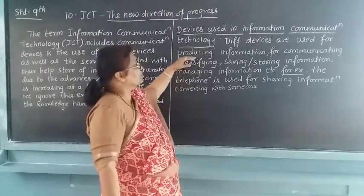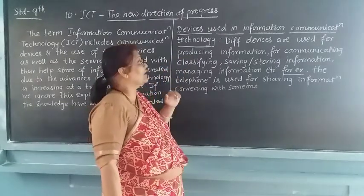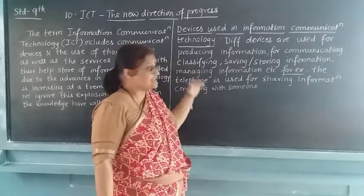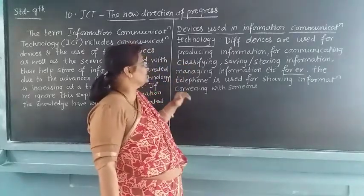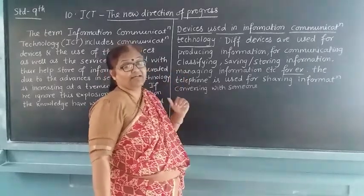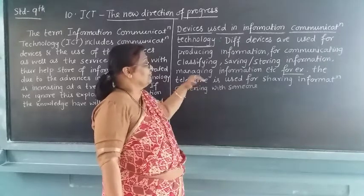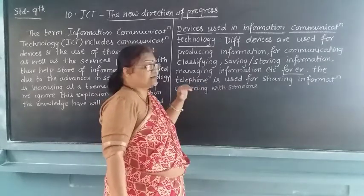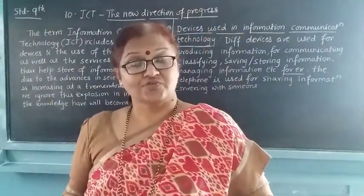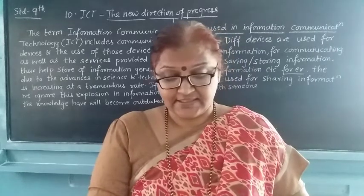Different devices are used for producing information. There are different devices used for producing information, for communicating, for classifying, for saving or storing the information, or for managing the information — these are all things done by information communication technologies. For example, the telephone is used for sharing information and conversing with someone. Nowadays we are using the telephone for communication with someone.